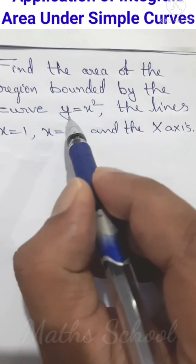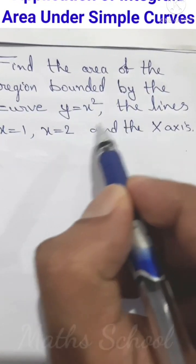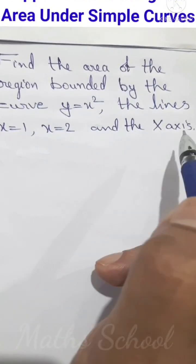Find the area of the region bounded by the curve y = x², the lines x = 1, x = 2, and the x-axis.